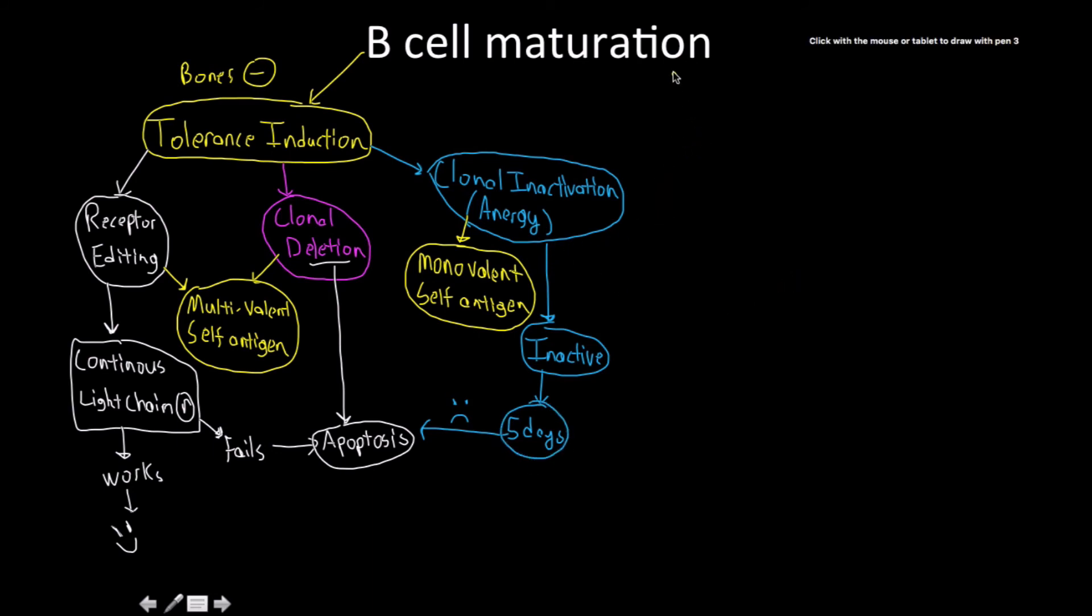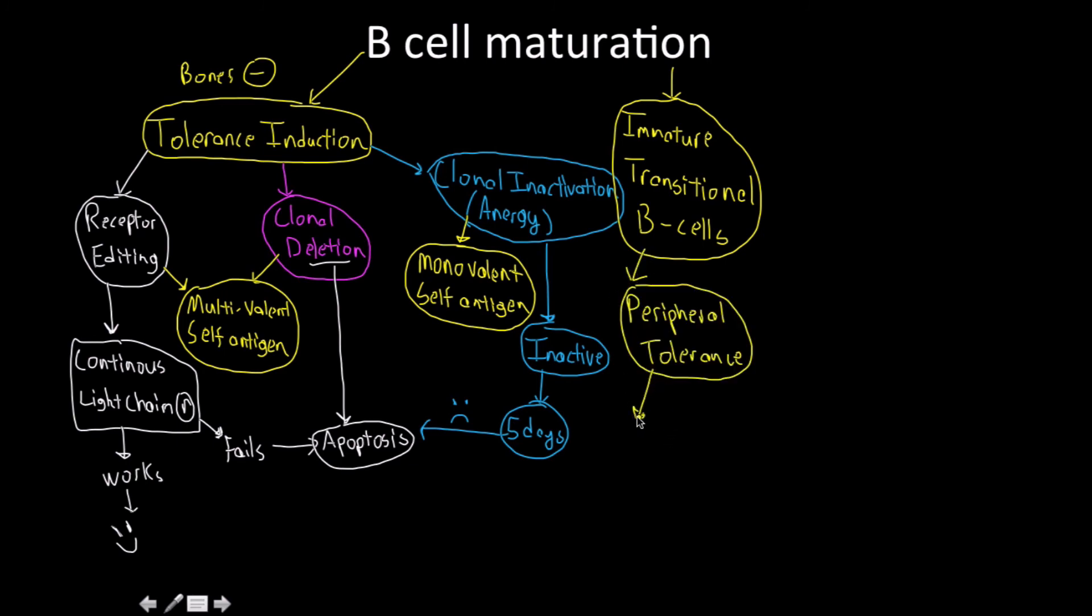Immature transitional B-cells are peripheral tolerance. These are the cells undergoing this process. There are three consequences of peripheral tolerance: clonal deletion and anergy. It's interesting they weren't grouped together in central tolerance, but in peripheral tolerance they are. Peripheral tolerance means stuff in the periphery - the bloodstream or tissue spaces, your own connective tissue. The reason we can only use these two is by the time we become an immature transitional B-cell, there's no more room for light chain recombination. Not gonna happen.